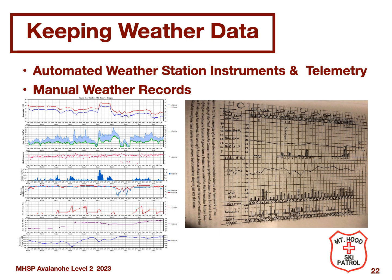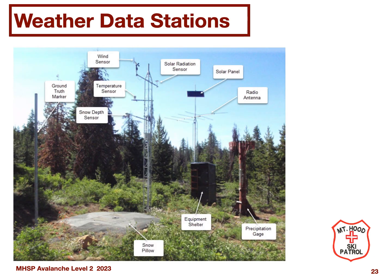Another source of weather information is from the ski resorts themselves. The image on the left is from Mount Hood Meadows Telemetry Station; the image on the right is a manual weather record, which you won't find at many resorts anymore. Modern weather telemetry stations are scattered around the western U.S. and Canada to track weather data and develop weather history. The driving force behind their distribution is precipitation tracking for water forecasting for agriculture, and the avalanche community gets the benefit of this activity.